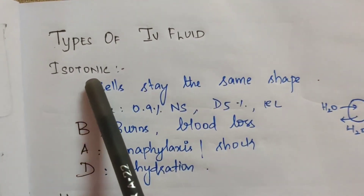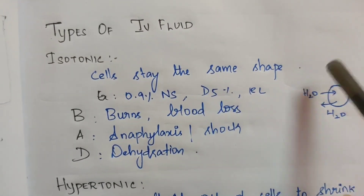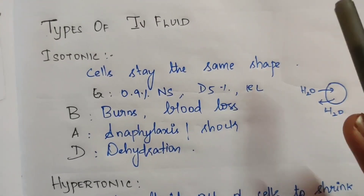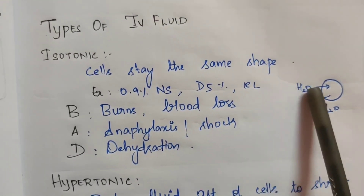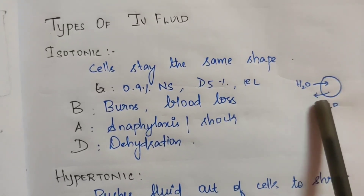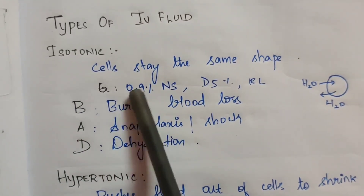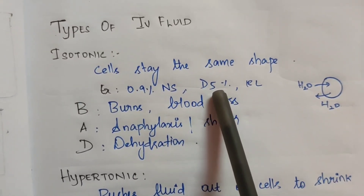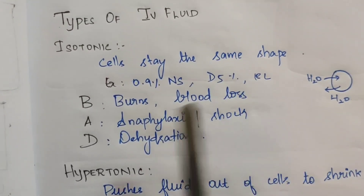What is isotonic? Cells stay the same shape. If you have a cell, it will maintain the same shape — the H2O will be the same amount. Examples include 0.9% NS, Dextrose 5%, and Ringer's Lactate Solution.